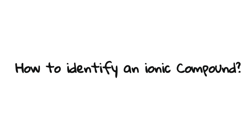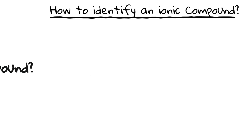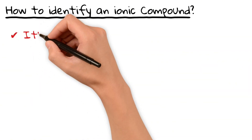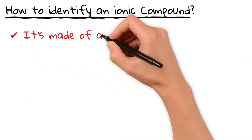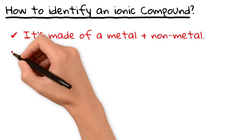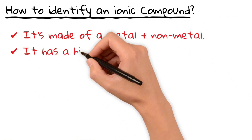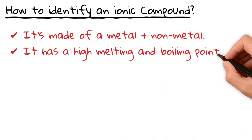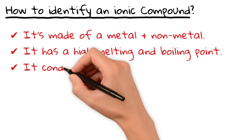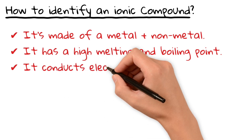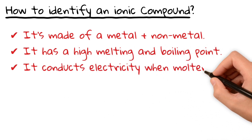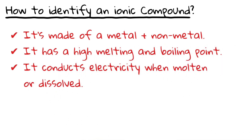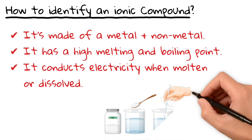So how can you tell if a compound is ionic? Look for these signs: it's made of a metal and nonmetal; it has a high melting and boiling point; it conducts electricity when molten or dissolved. For example, table salt dissolves in water and can conduct electricity.